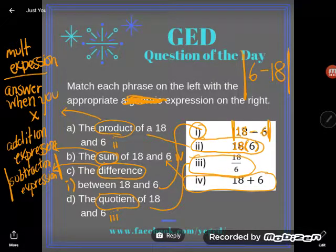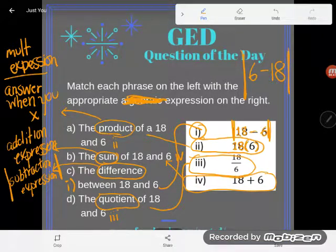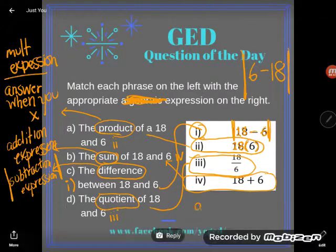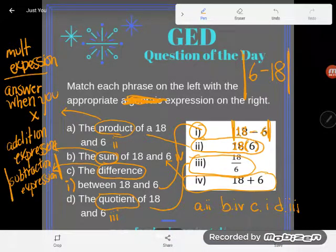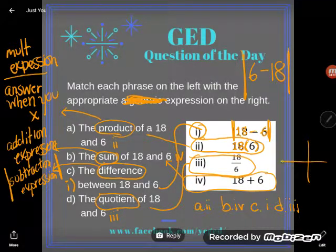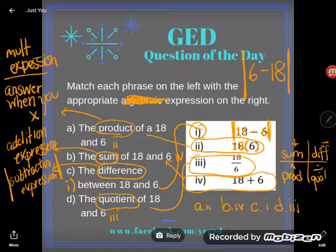Okay, so correct answers here: a is 2, b is 4, c is 1, and d is iii. The thing you need to walk away realizing is these four words. Sum is an addition expression, difference is a subtraction expression, product is a multiplication expression, and quotient is a division expression. Put that in your notes.